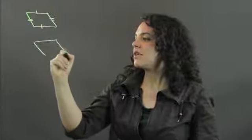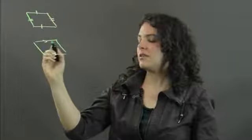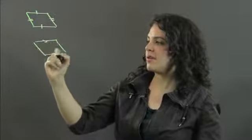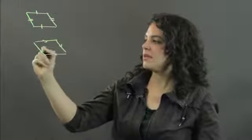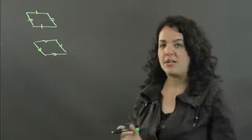Similarly, if you have two pairs of sides that are parallel and they're opposite, so this is one pair of opposite sides that are parallel, here is another pair of opposite sides that are parallel, then you have a parallelogram.